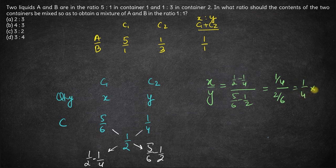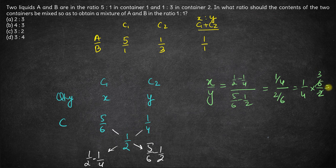This is effectively 1 by 4 into 6 by 2. 6 goes by 2, 3 times. So, the ratio of these two quantities to be mixed is 3 is to 4.